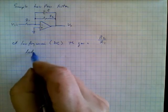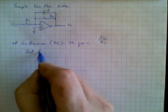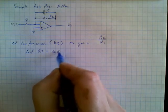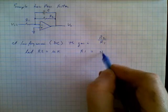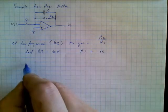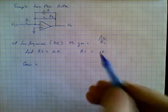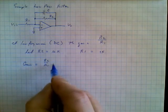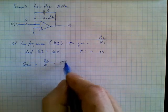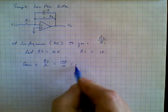So we're just going to simply say let R2 equal 10k ohms. And we'll let R1 equal 1k. So the gain is equal to R2 over R1 is equal to 10k divided by 1k is clearly equal to 10.